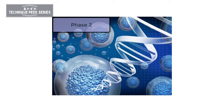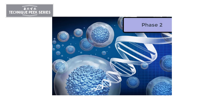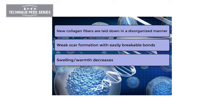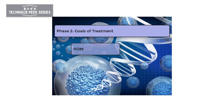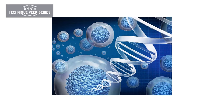Phase 2 is called repair and regeneration. During this phase, new fibers of collagen are being laid down in a disorganized fashion. Scar tissue will form with easily breakable bonds. The swelling and warmth will decrease, but pain with tissue stretch is often present. The goals of treatment during this phase are range of motion, joint and scar mobilization, and the use of light loads to promote tissue remodeling.